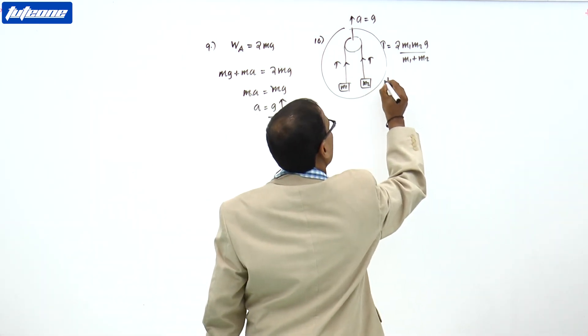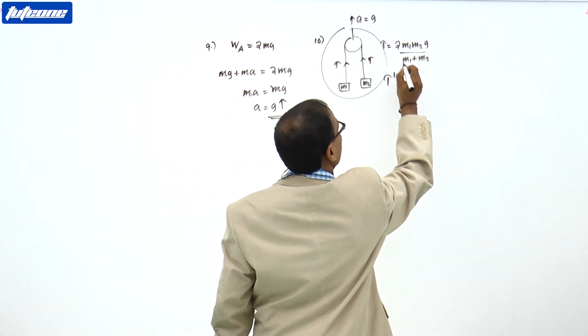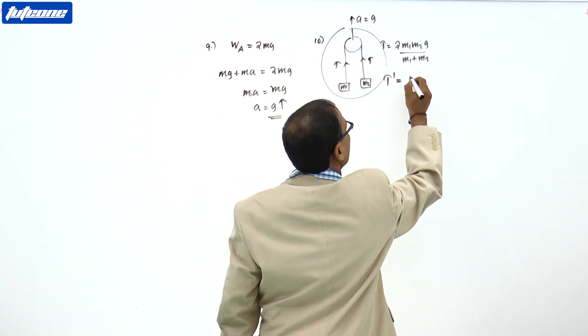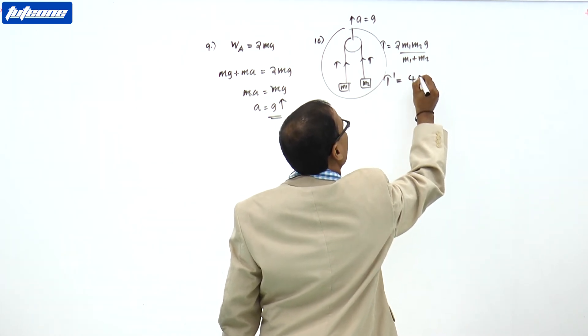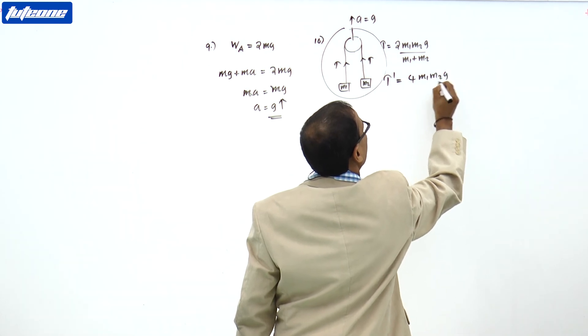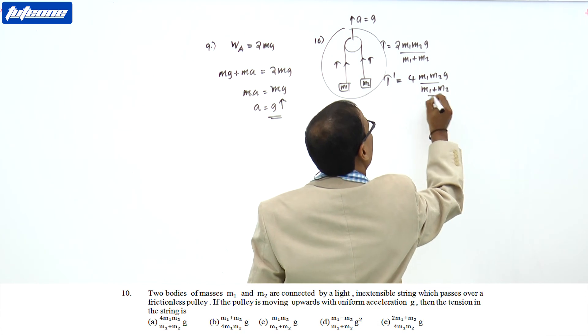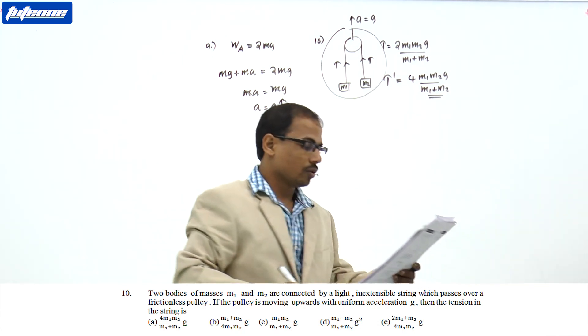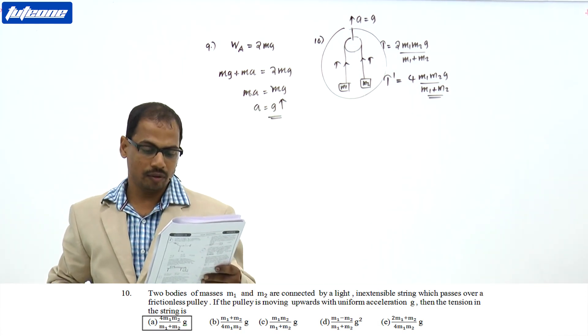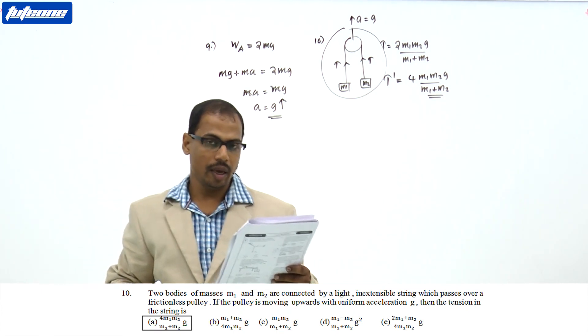We can write new tension T dash equal to 2 into 2, that is 4M1M2G by M1 plus M2. So, option is A.